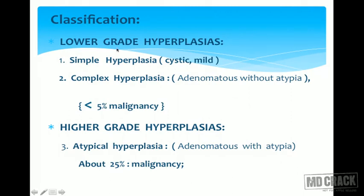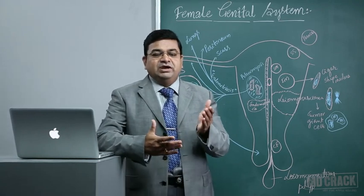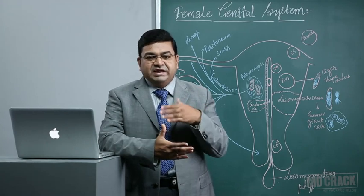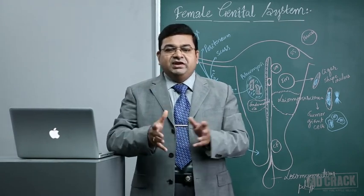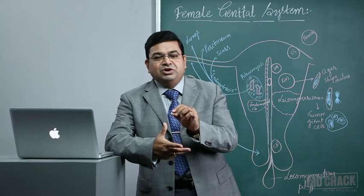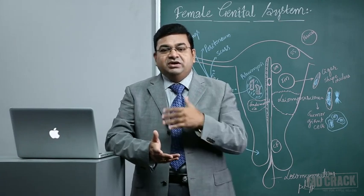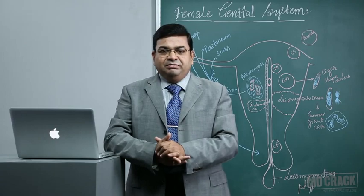Endometrial hyperplasia is classified as low-grade and high-grade. Low-grade hyperplasia is further classified as simple and complex based on how the glands appear microscopically. Simple endometrial hyperplasia may be with or without atypia (ATP) — without atypia means the nucleus shows no marked pleomorphism, no hyperchromatic nucleus, and no prominent nucleoli. Complex hyperplasia shows complex papillary infoldings; with atypia means the nucleus shows anaplastic features like hyperchromatic nucleus, prominent nucleoli, and increased N:C ratio.